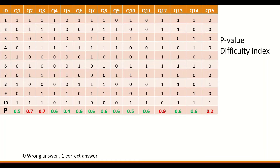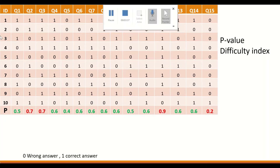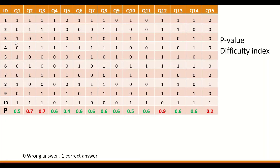This table shows 15 multiple-choice questions answered by 10 students. Answers were recorded as 1 for correct and 0 for wrong. To calculate the item difficulty or p-value for each question, add all the correct answers for each question and divide by the total number of students. For question one, it is 5 correct answers divided by 10, giving a value of 0.5.